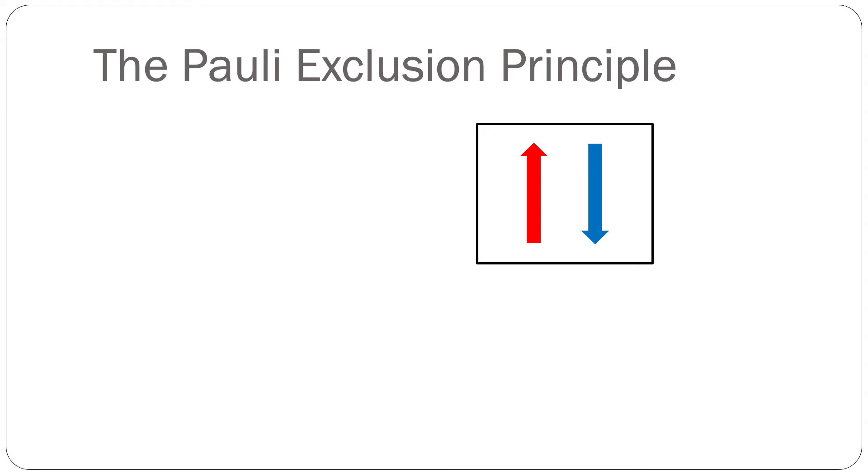We saw in an earlier video that electrons behave one of two ways, spin up or spin down. You'll see here I have shown a box to represent an atomic orbital and arrows to represent the electrons. There is one arrow shown pointing up and another pointing down to represent spin up and spin down respectively.